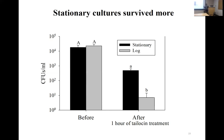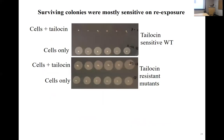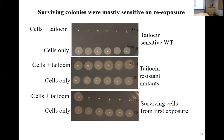To determine whether surviving cells are resistant or tolerant, we did a re-exposure. We have two panels: one for sensitive cells and one for characterized resistant mutants. When spotted with tailocin, sensitive cells show no growth while resistant cells are unaffected. When we do this for cells that survived our exposure, very few fractions come out as resistant and most are actually tolerant. We can now say that target cells had genuine tolerance to the tailocins applied.